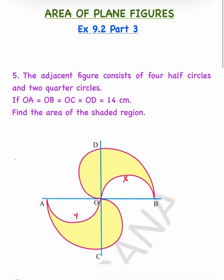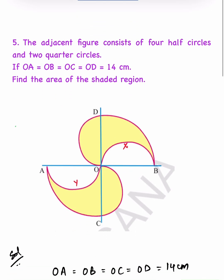In the given figure, we have to find the area of the shaded region in yellow color. That means this part, this part, this part and this part. Together, we have to find the area of the shaded region.